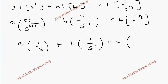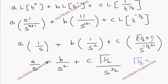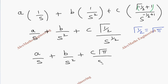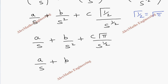So we have a times 1 by s, plus b times 1 by s squared, plus c times L of t to the power minus half. Since n is not an integer, we apply gamma of n plus 1 by s to the power n plus 1, giving gamma of minus half plus 1 divided by s to the power minus half plus 1. The first term is a by s, second term is b by s squared, and the third term is c times root pi divided by s to the power half. This can be written as a by s plus b by s squared plus c times root pi by s to the power half.